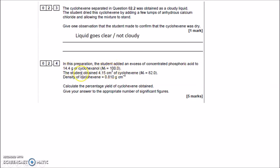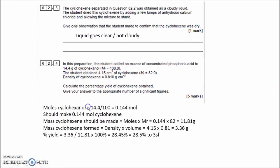I've been given a mass and an Mr of cyclohexanol, so moles = mass ÷ Mr = 14.4 ÷ 100 = 0.144 moles of cyclohexanol. Since cyclohexanol makes cyclohexene with a 1:1 molar ratio — both have six carbons — it should make the same number of moles of cyclohexene: 0.144 moles. The theoretical mass = moles × Mr = 0.144 × 82 = 11.81 g of cyclohexene.